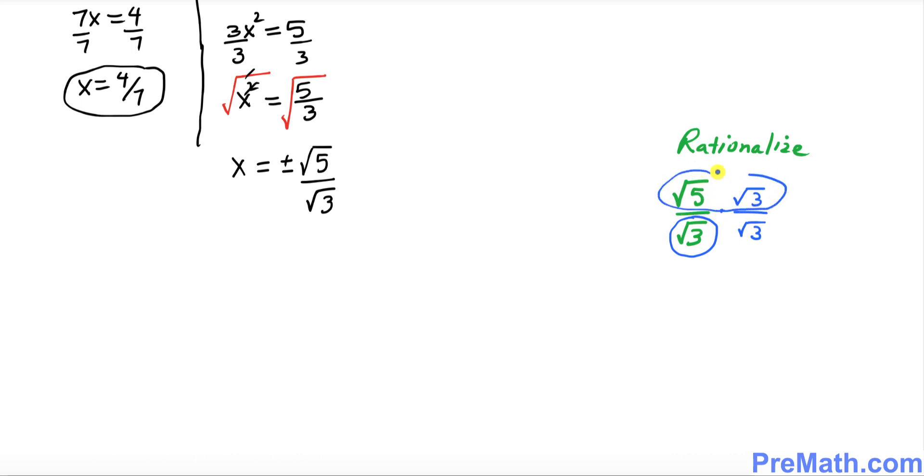If you multiply this, that's gonna give you square root of 5 times square root of 3. And when you multiply these two over here, that is gonna become simply 3. So on the top, that's gonna be 5 times 3 is square root of 15 over 3.